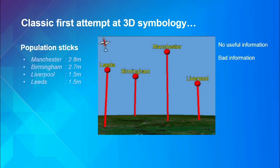Or worse, if you come down close to the ground and look across, you get bad information — Leeds looks bigger than Birmingham, which is obviously not true. And all I did was move around. You have no control over that. When you author a scene, you need to think about what users will do when they get in. They're going to fly around and go to weird locations, and we've got to be careful they don't come up with bad results or bad understanding of the data.